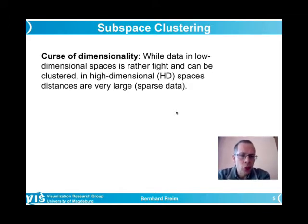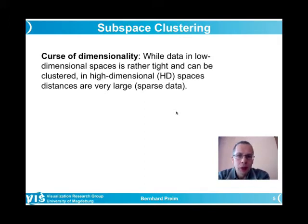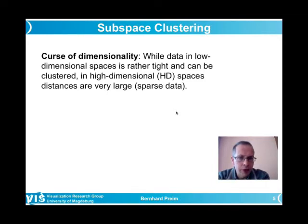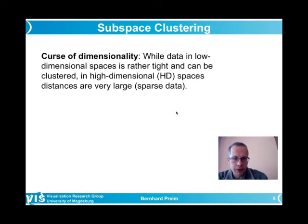The so-called curse of dimensionality — in German, 'Fluch der Dimensionalität' — describes how in low-dimensional space data can be dense and clusterable, but in high-dimensional space all elements tend to be quite far from each other. Distances grow exponentially with the number of dimensions, so at some point global clustering is no longer useful and does not lead to meaningful results.